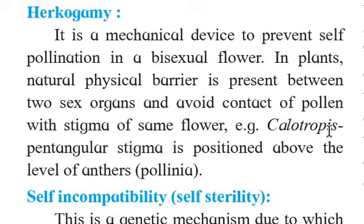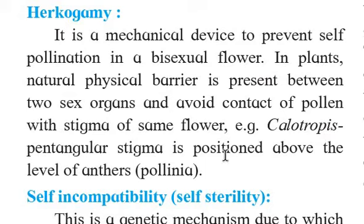The example given is Calotropis — the plant whose flowers are offered to Lord Hanuman, also called the cotton flower. If you carefully unfold the flower, you will see a pentangular stigma. In Calotropis, the pentangular stigma is positioned above the level of the anthers, due to which pollen grains are unable to get deposited on the stigma of the same flower. This structure is called the pollinium.